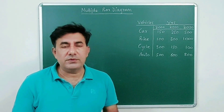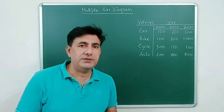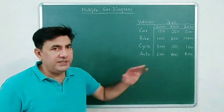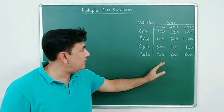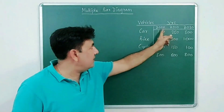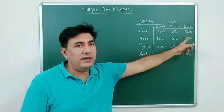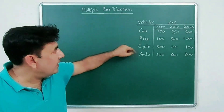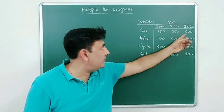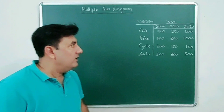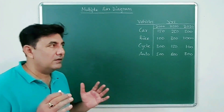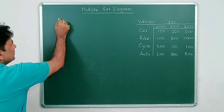Now, how to draw multiple bar diagrams — very important for your examination, so watch with full attention. In this question, along with vehicles and years, you are also given production figures. There are three years given: 2000, 2010, and 2020, and vehicles: car, bike, cycle, auto. For example, in 2000, cars were 150, bikes 250, cycles 500, and so on.